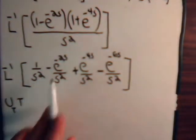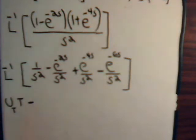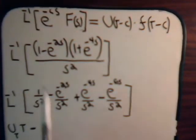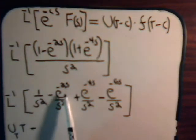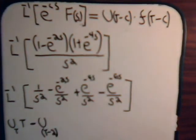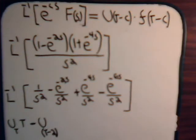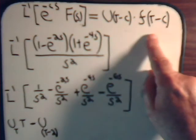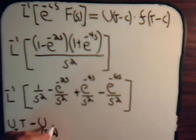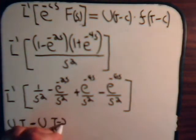If we want, we can write the step function u of t times t. Then from the next term we have minus e to the minus 2s, so c corresponds to 2. That gives us u of t minus 2, and since F of s is 1 over s squared the function is t, but we need the shifted function t minus c — so with c equals 2 this is times t minus 2.